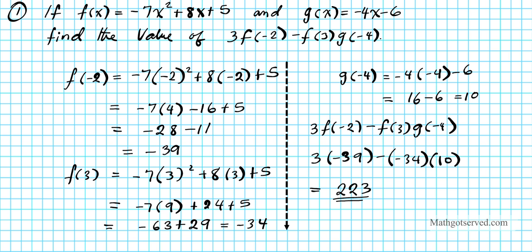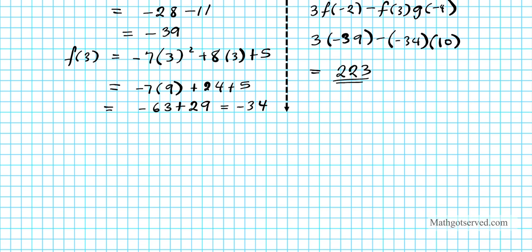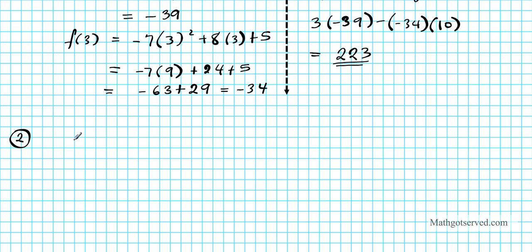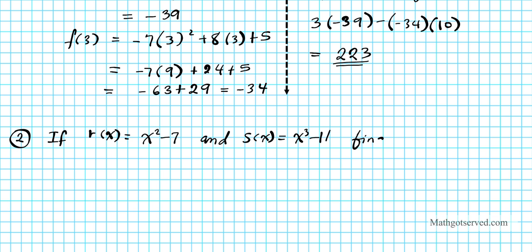Let's go ahead and consider another example. This one involves finding the value of a composite function at a point. Question 2: if r of x equals x squared minus 7, and s of x equals x to the third minus 11, find the value of r of s of 2.